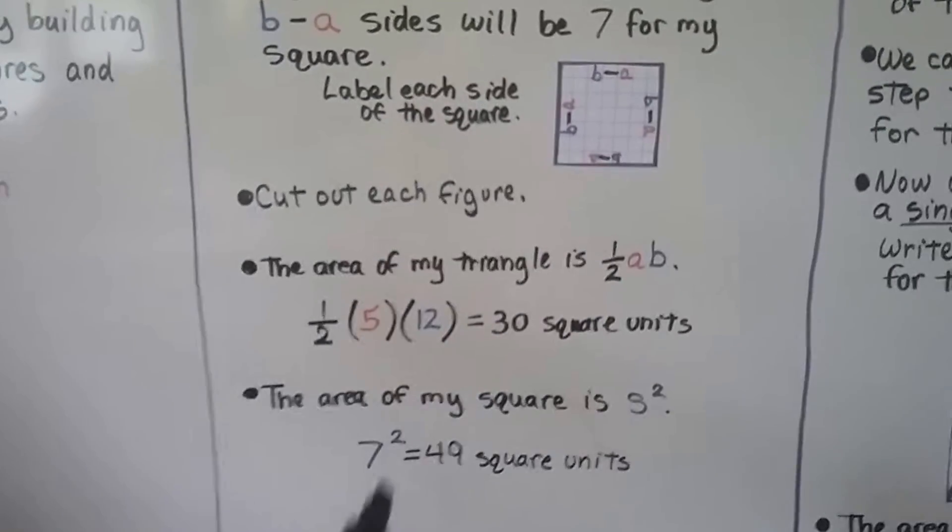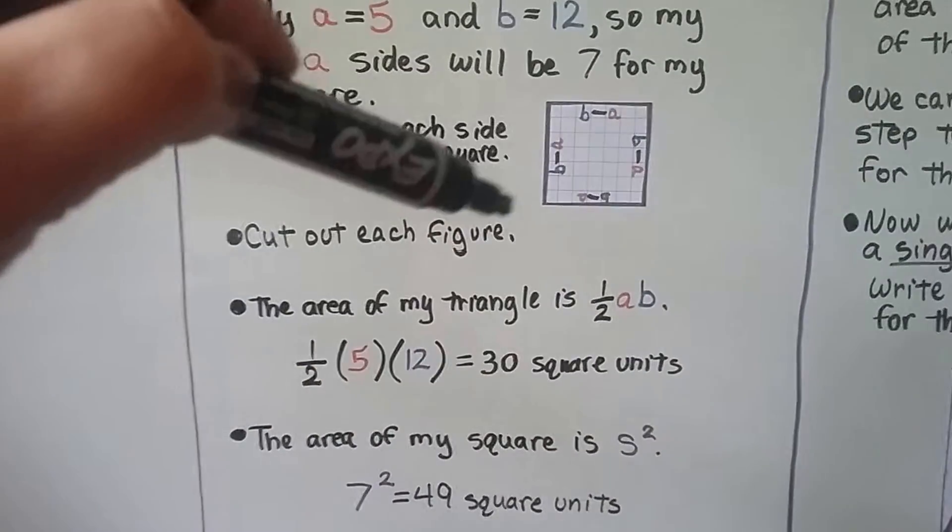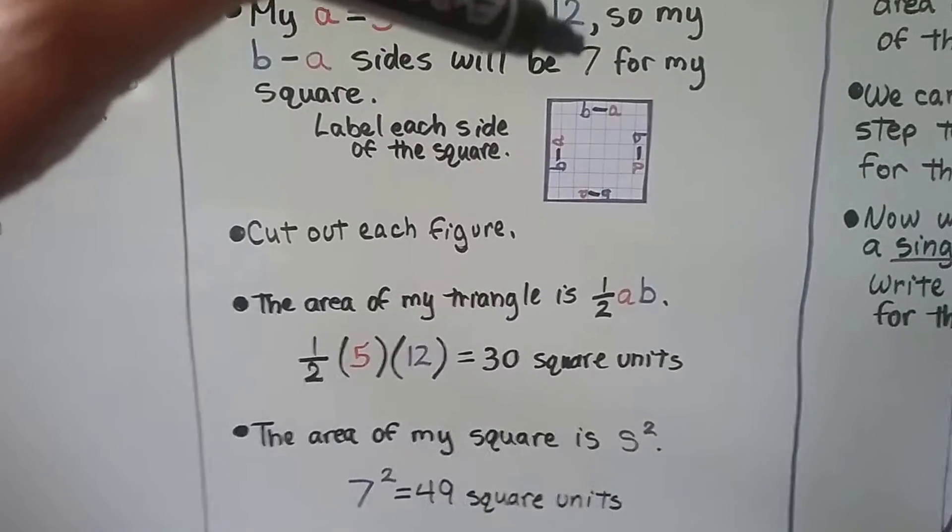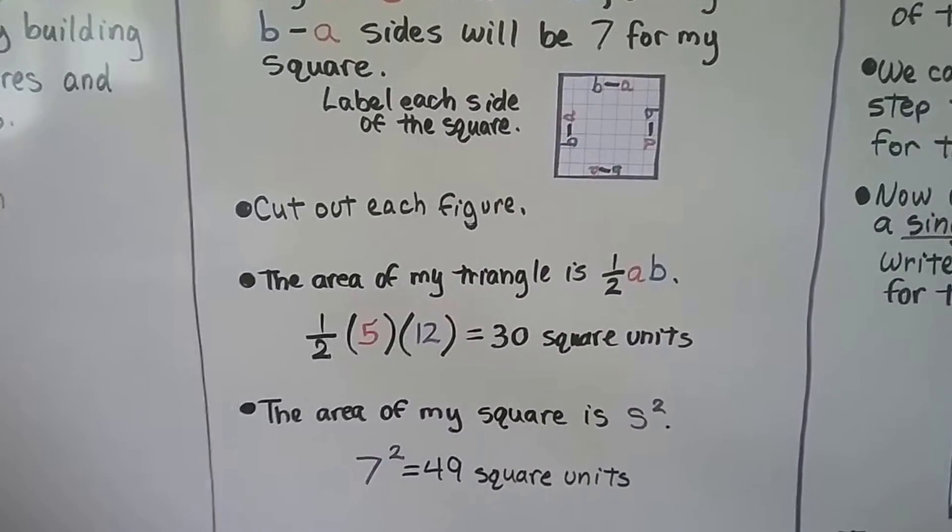And the area of my square is s squared. That's side times side, right? So it's going to, because it's 7, it's going to be 7 times 7. So that means it's 49 square units for my little square.